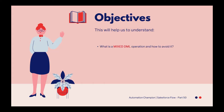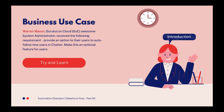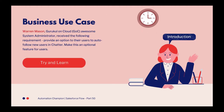The objectives are: understand what DML operations are and how to avoid issues with them; how to add time-dependent actions in an after-save record trigger flow; how to use loops to work with multiple records; what bulk-safe flow is and how to create a flow that takes minimal operations; and how to monitor the time-based flow queue.